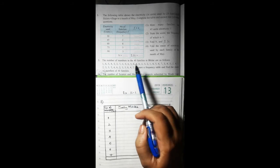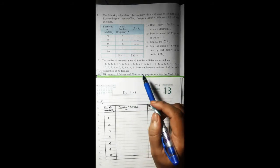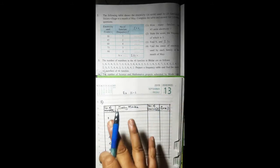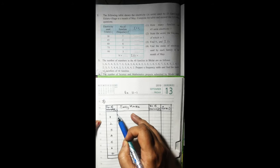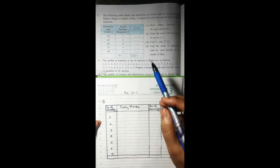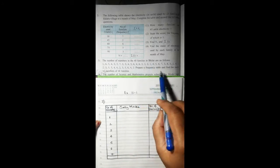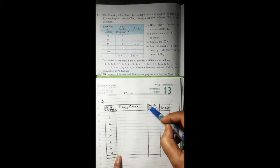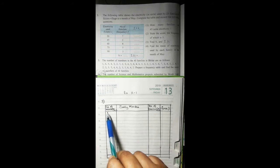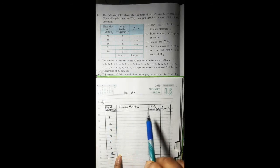First, what you have to do is draw a table. The first column will be number of members. Since the frequency is not given, you have to find out the frequency, so you require one column called tally marks. Then once you get the tally, you will get number of families, and then fi into xi.